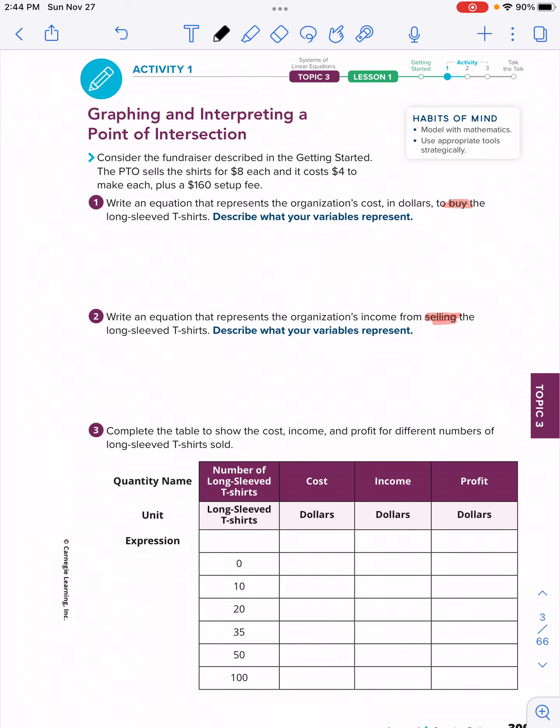The context we're familiar with from other lessons we've done: working with buying and selling shirts. So it says the PTO, the Parent Teacher Organization, is trying to raise funds, and they sell shirts for $8 each. Let's underline that. And it costs $4 each plus a $160 setup fee. So there's two things here: we're going to be selling and purchasing these shirts.